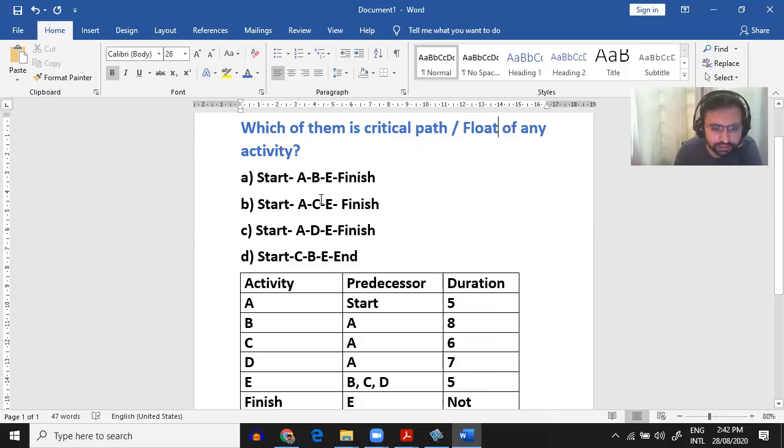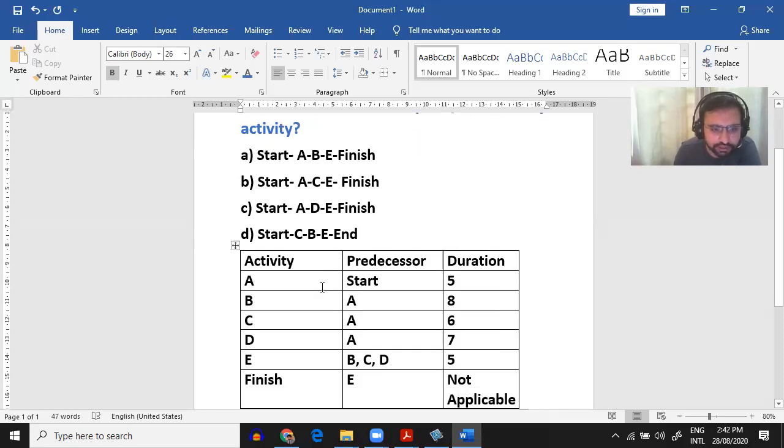A-B-E, A-C-E, A-D-E. And this is the basically table. Activities are starting from A. Then B, C, D have a predecessor as A, A, A. Then all three activities are going to E, and E is going to finish. So we have duration 5, 8, 6, 7, 5. And let's see how we can make a whiteboard for it.